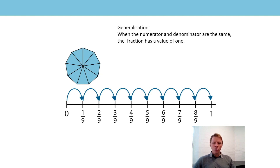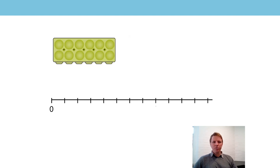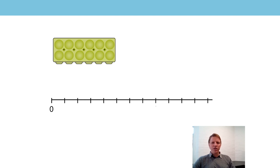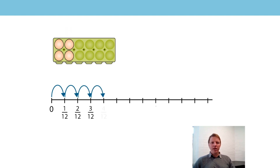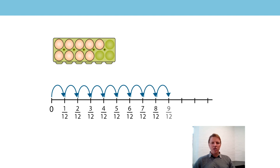One more time — here I've got an empty egg box. Let's see what happens when we add one egg each time and track the fraction of the whole egg box. The top row has six empty spaces, and six plus six equals 12, so our fractions must be twelfths. Count up with me: zero, one twelfth, two twelfths, three twelfths, four twelfths, five twelfths, six twelfths, seven twelfths, eight twelfths, nine twelfths, ten twelfths, eleven twelfths, one.